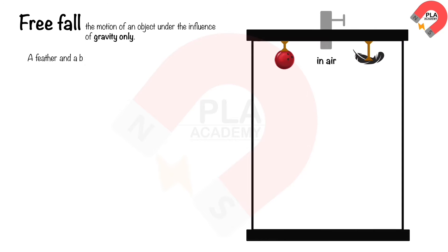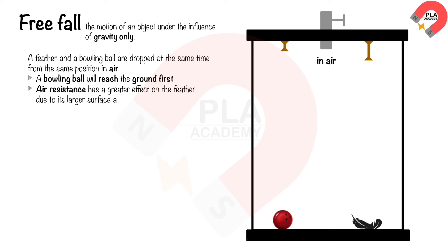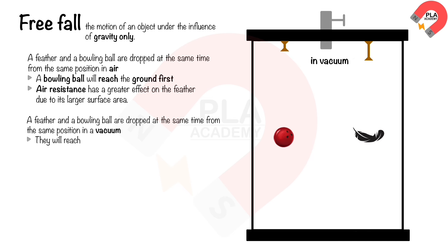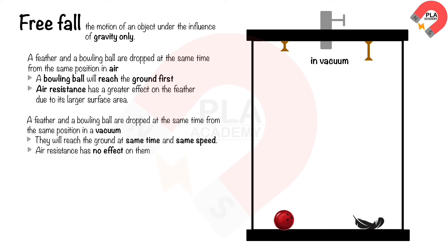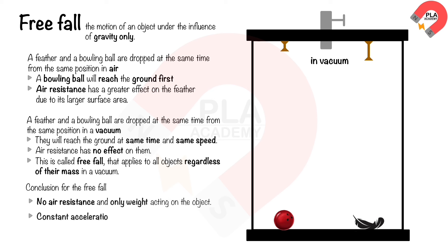Free fall is the motion of an object under the influence of gravity only. If a feather and a bowling ball are dropped at the same time in air, the bowling ball hits the ground first because air resistance has a greater effect on the feather due to its larger surface area. In a vacuum, both reach the ground at the same time and speed because there is no air resistance — this is called free fall. The object accelerates constantly towards the ground due to gravity, denoted by g, with a value of approximately 10 m/s².